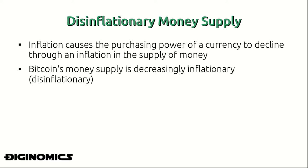This is necessary in an economy with a central banking institution such as America, because if it were a deflationary money system, the debt of the US government would increase in its real value over time — putting the government in perpetual debt and an unsustainable position. Bitcoin's money supply is decreasingly inflationary, or disinflationary, in that it becomes less inflationary over time.